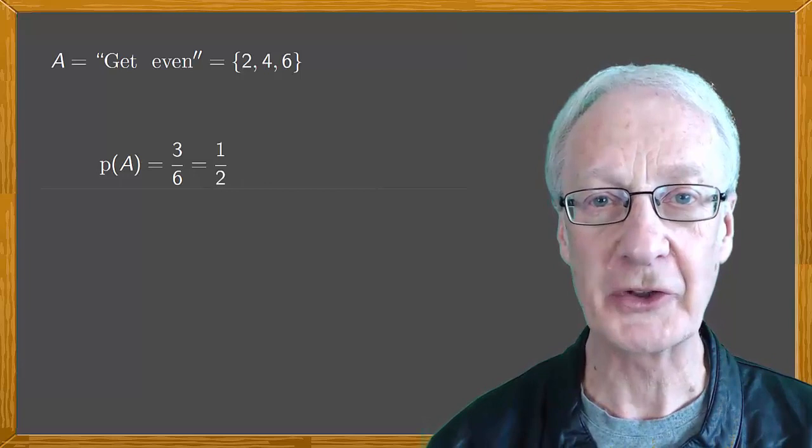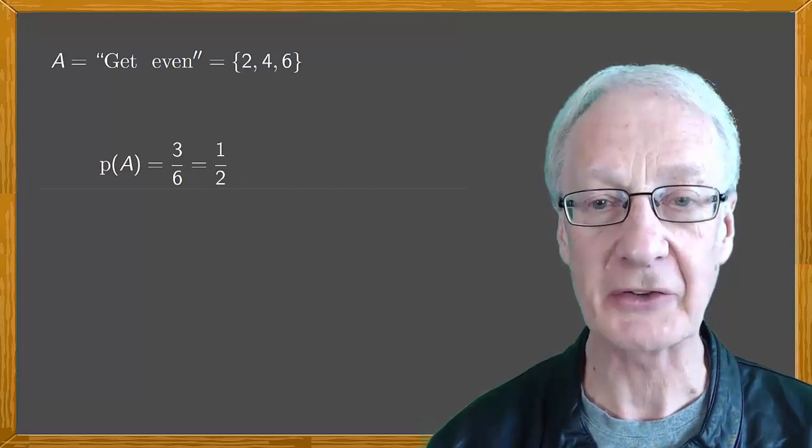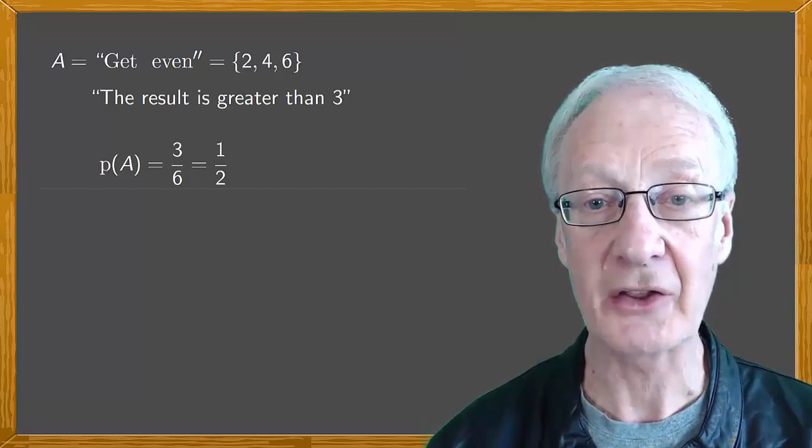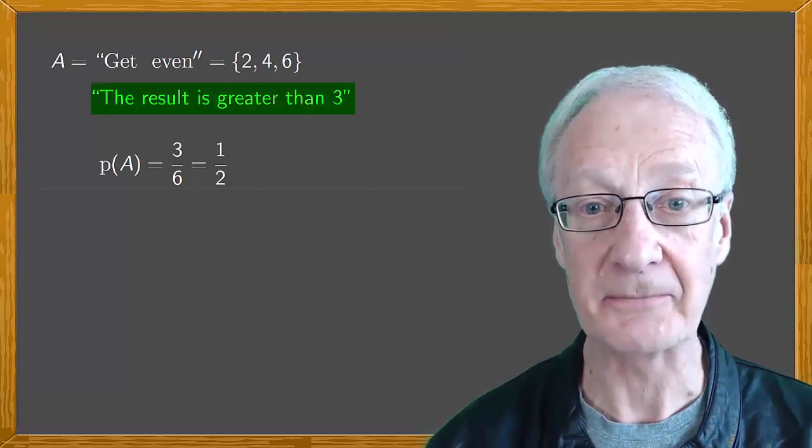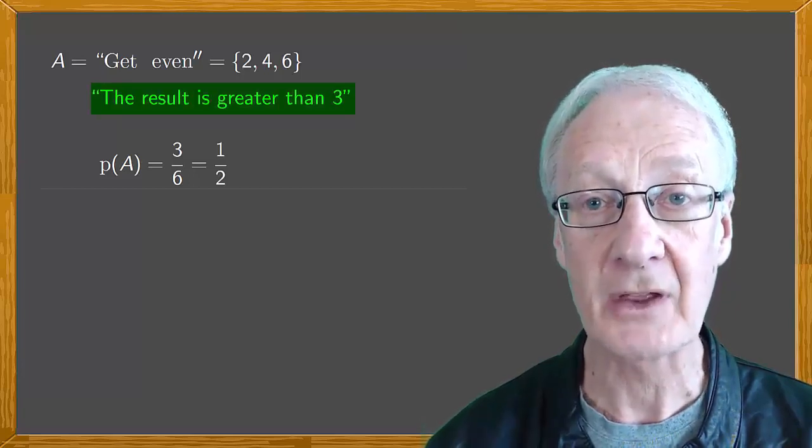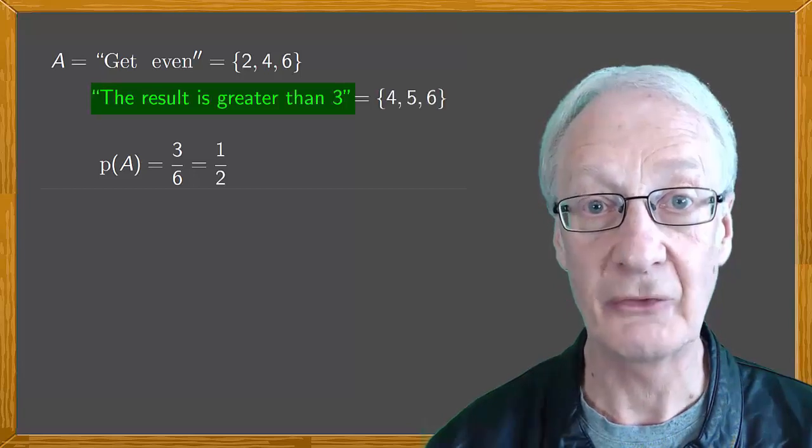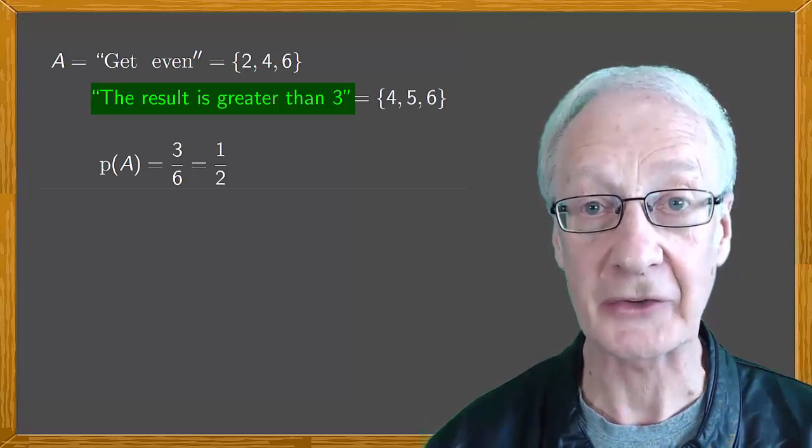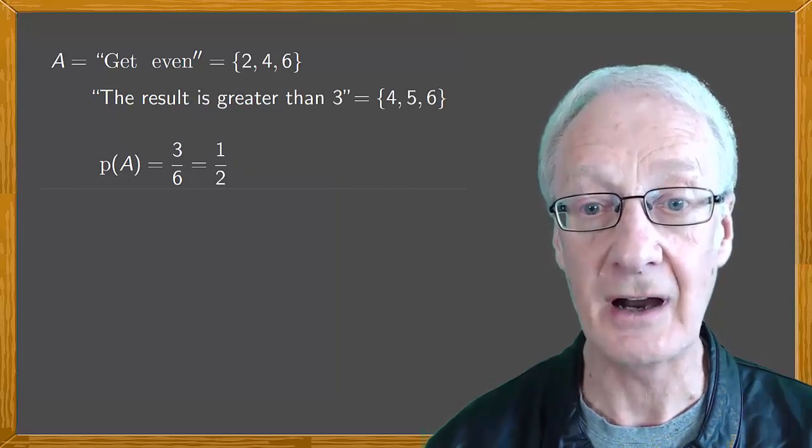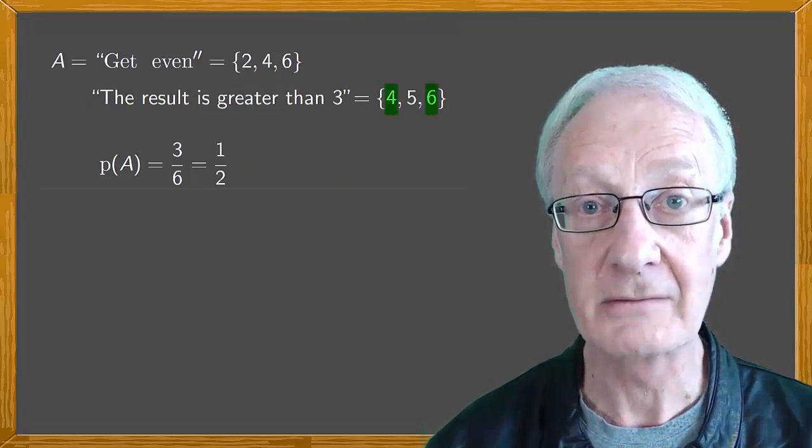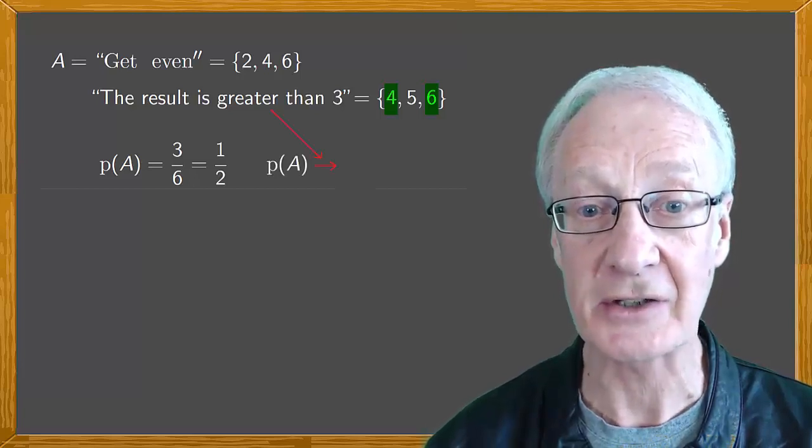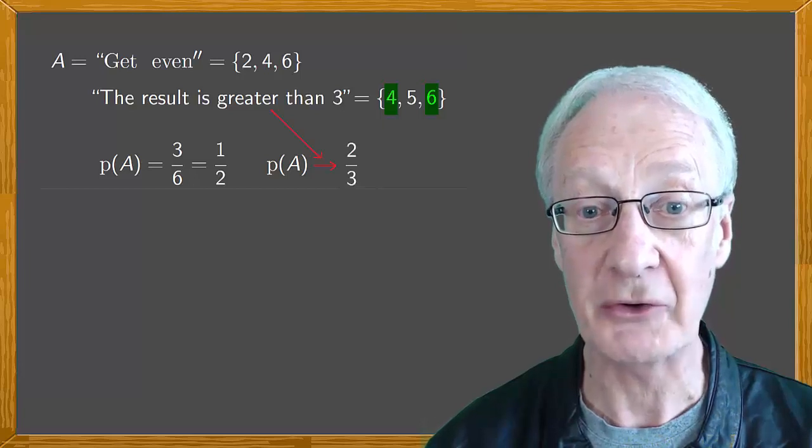Now suppose whoever rolls the die looks at the result and gives us a clue. They tell us that the result is greater than 3. Now we've got a different situation. Because knowing that the result is greater than 3, the possible cases are 4, 5 or 6. And of these, the favourable cases of get even are 4, 6. The probability of getting an even in these circumstances is 2 over 3.